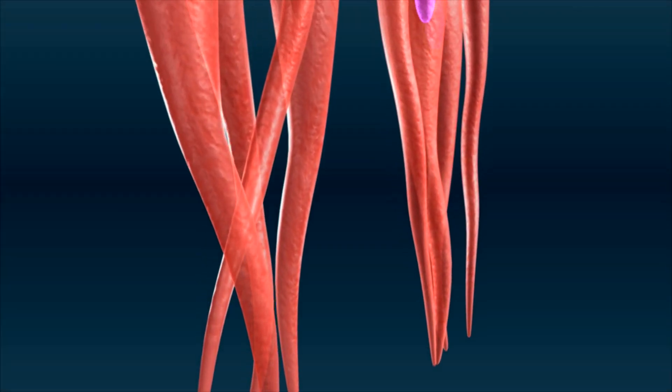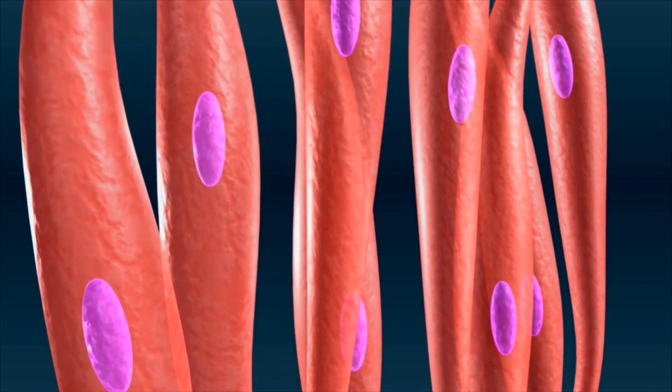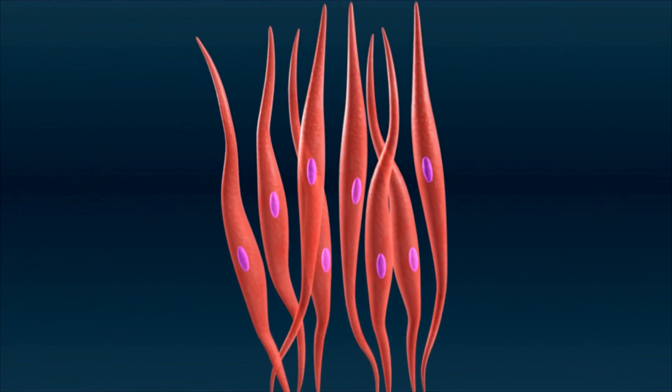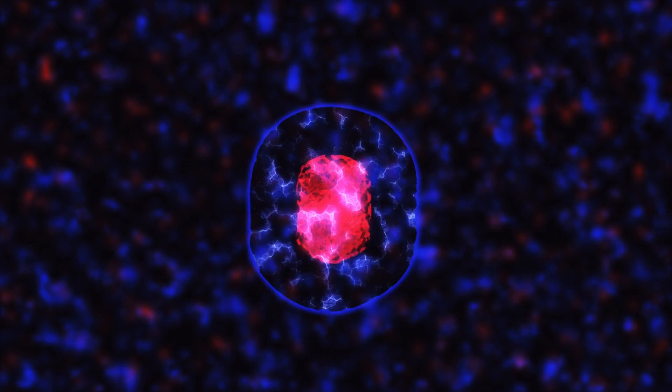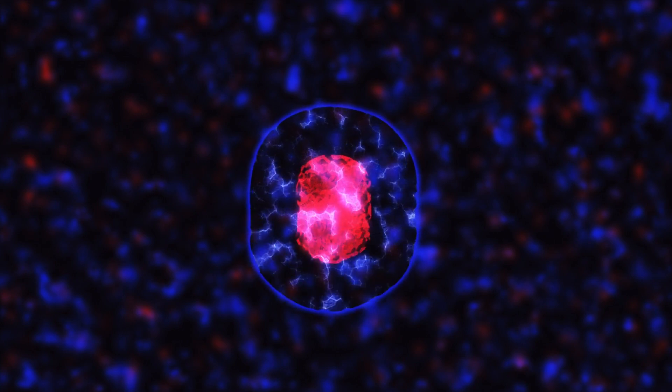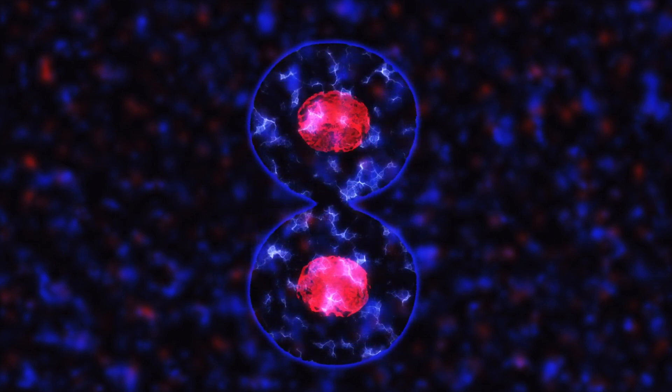For example, muscle cells are specialized for contraction and movement, while nerve cells are designed for transmitting signals. This specialization allows for the complex interactions and systems found within living organisms, enabling them to function efficiently in their respective environments.